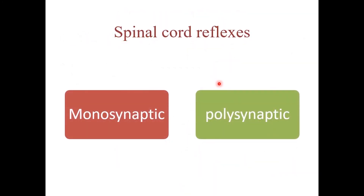Although a huge part of spinal cord function is under the influence of the brain, there are many reflexes that are generated in the spinal cord independently of the brain. A reflex is a rapid automatic response to a particular stimulus, and its pathway lies entirely within the spinal cord. Spinal cord reflexes are either monosynaptic, with only two neurons participating in the reflex arc — one motor and one sensory — or polysynaptic, involving multiple neurons and more complex groups of muscles.